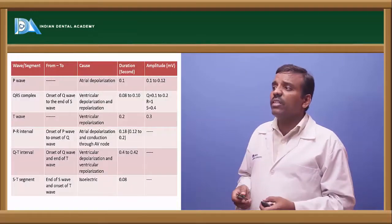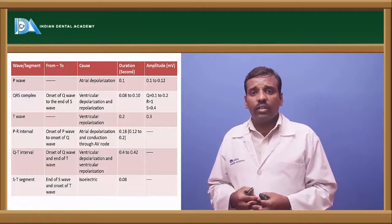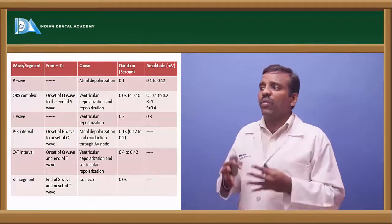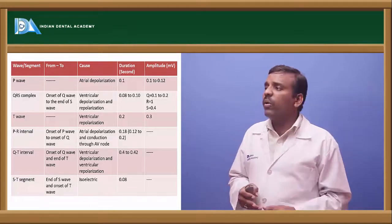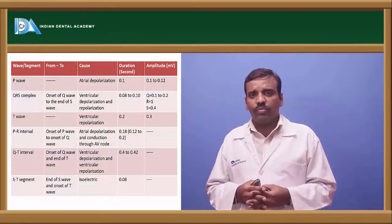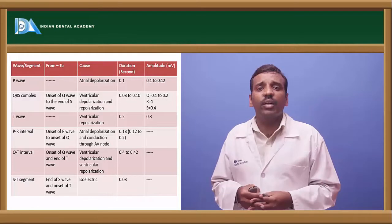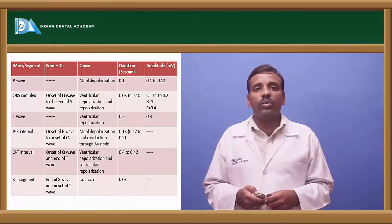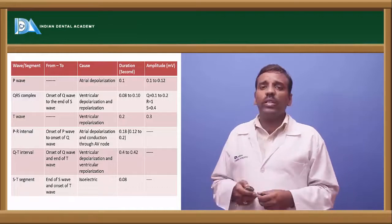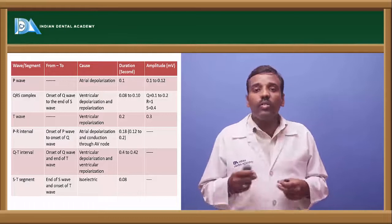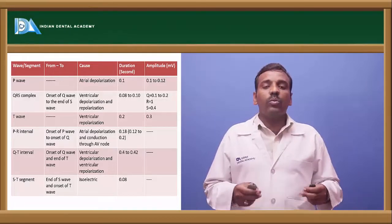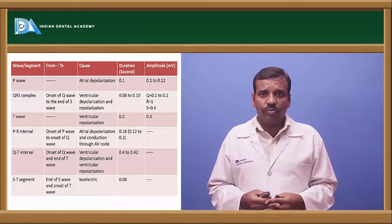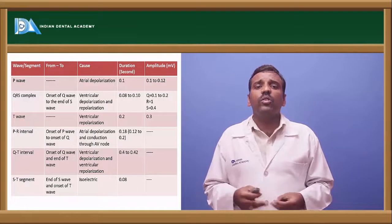There are totally five waves in an ECG: P, Q, R, S, and T waves. The P wave is the first wave, caused by atrial depolarization, with a duration of about 0.1 seconds and amplitude of 0.1 to 0.12 mV. The QRS complex includes the Q wave, R wave, and S wave — Q and S are negative waves and R is the positive wave.